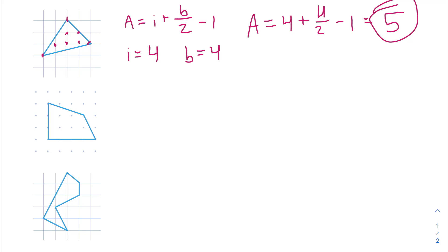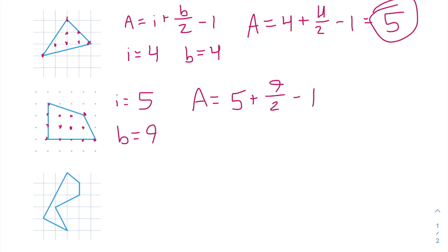Now let's move on. We want to find the area of this quadrilateral right here. To use Pick's Theorem, we need to find the number of interior lattice points and the number of lattice points on the perimeter. We have 1, 2, 3, 4, and 5 lattice points on the interior, so i is equal to 5. And 1, 2, 3, 4, 5, 6, 7, 8, 9 on the perimeter, so b is equal to 9. This means the area is equal to 5 plus 9 over 2 minus 1, which is 4 plus 4.5, which is 8.5.